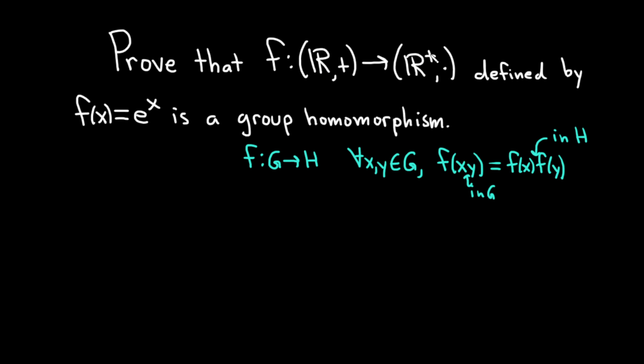The codomain is the set of positive reals. That's what the little plus means here on top of the R. And this is a group under multiplication. So we're looking at a map or a function from the real numbers under addition, which is a group, into the positive reals under multiplication, which is a group. And our function is defined by f of x equals e to the x. And we're going to prove that this is a group homomorphism. This is a really simple proof, but it's kind of fun.